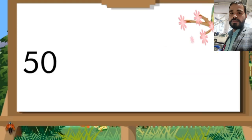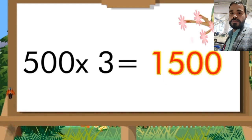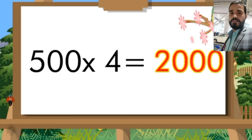Five hundred threes are one thousand five hundred. Five hundred fours are two thousand.